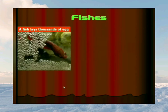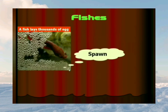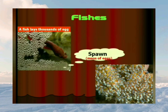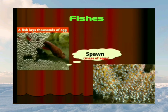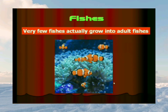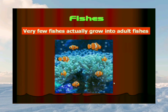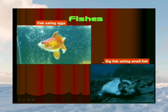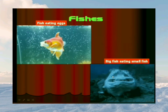A fish lays thousands of eggs together in water. This mass of eggs is called spawn. Fish eggs do not have protective shells — they are covered with a soft jelly-like material. Out of thousands of eggs, only a few hundreds develop into adult fishes, because most eggs and young fishes are eaten by bigger fishes.